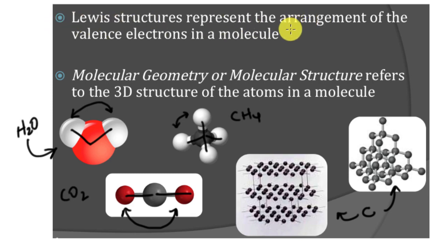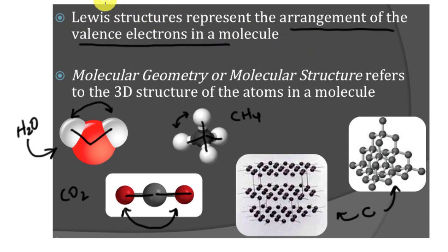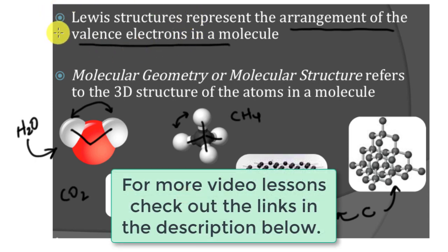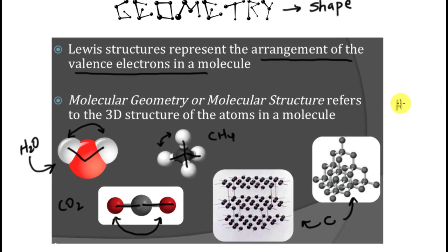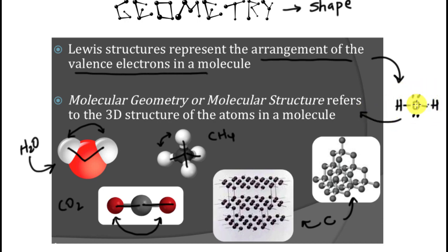Our Lewis structure is going to show the arrangement of the valence electrons in a molecule — it's not really showing us the shape. So be careful with Lewis structures. If I draw the Lewis structure for water, we have hydrogen, oxygen, and hydrogen, and we get two lone pairs or non-bonding pairs of electrons on oxygen. That's a correct Lewis structure, but it does not tell me anything about the three-dimensional shape directly. It can give you a false idea that this is linear, so be very careful when interpreting Lewis structures.